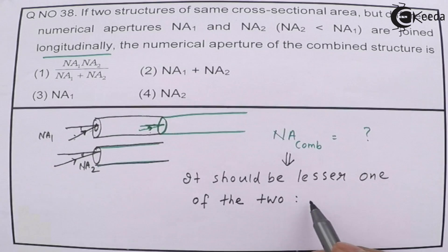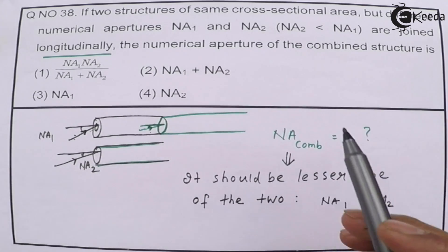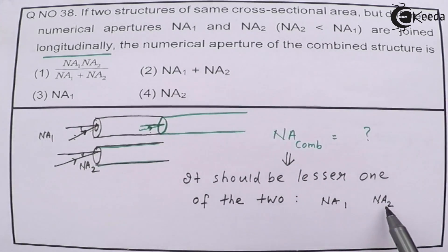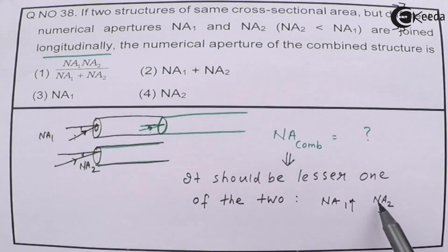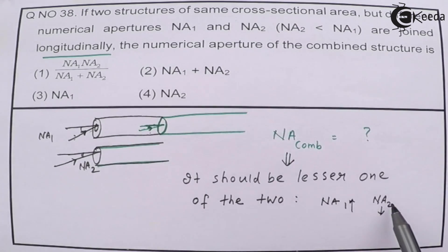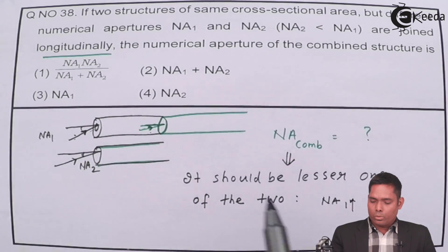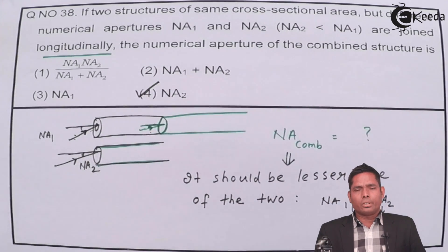We have got two choices, NA1 and NA2. Which is having less one? NA2. This is lesser, this is smaller and this is greater. So the combination will have this one, because if this is the one, then if you follow this the light will enter to the combination. So answer to this question is NA2. This is the answer. Okay, thank you.